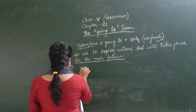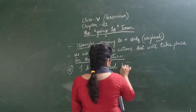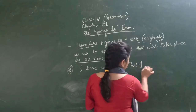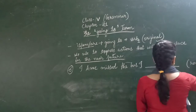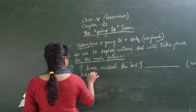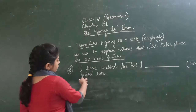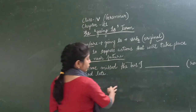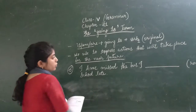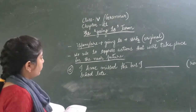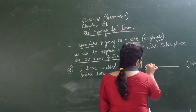Question number 6: I have missed the bus, then I blank — the verb given in brackets is reach — school late. So you have to fill in the going to form of the verb. With the subject I, we use am. So the answer is: I am going to reach school late.